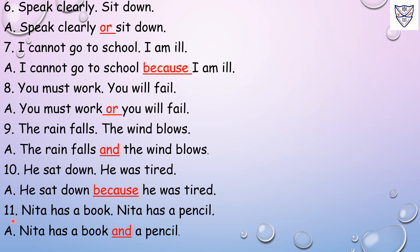Number 11: Neeta has a book. Neeta has a pencil. In the sentence we are talking about Neeta, so 'Neeta has' is common in both sentences. Answer: Neeta has a book and a pencil. We have joined the sentence with the conjunction 'and'.